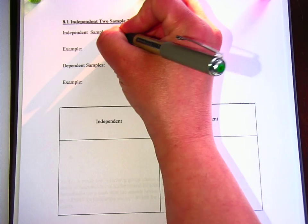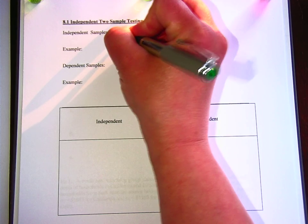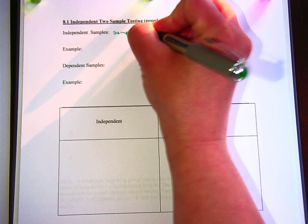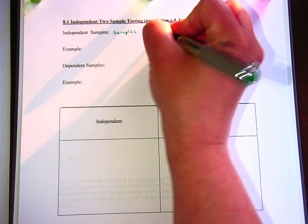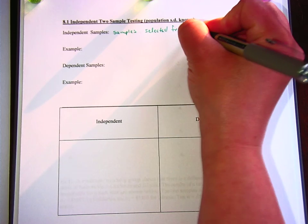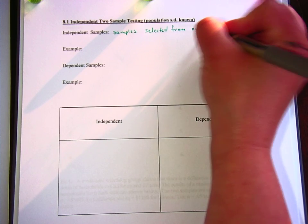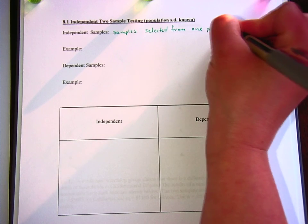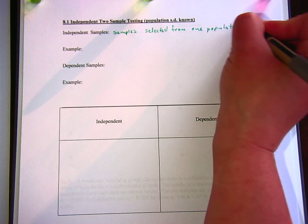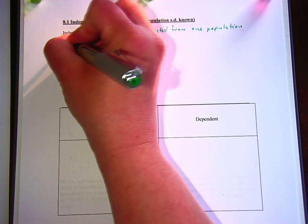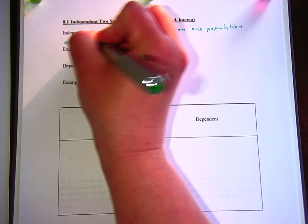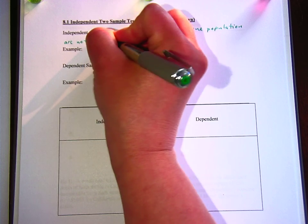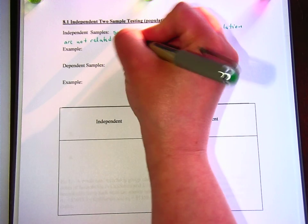So independent samples are samples that are selected from one population are not related to samples from another population.